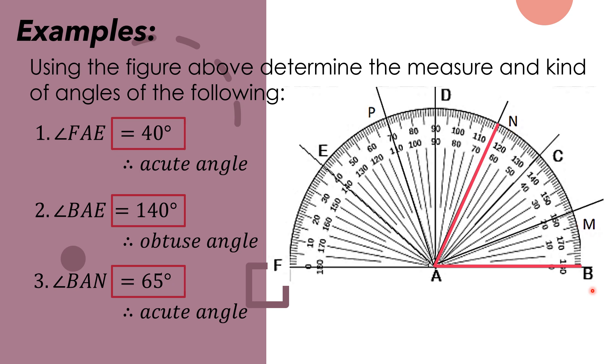Remember, when the zero we use is on the right, we will use the inner scale. When our first line is aligned here, we will use the outer scale.